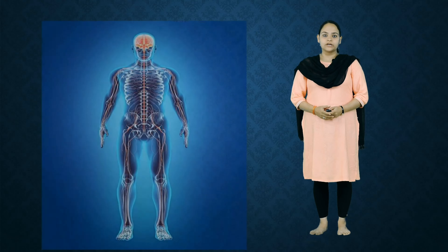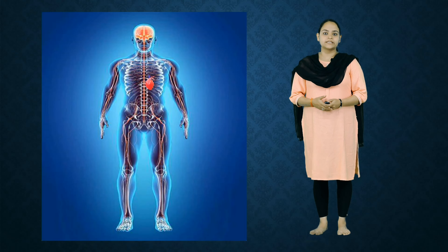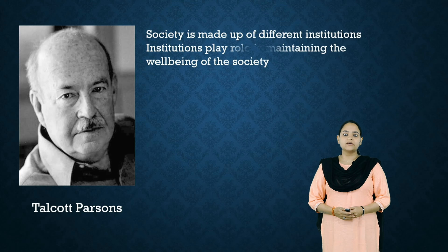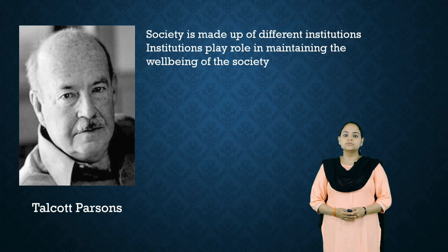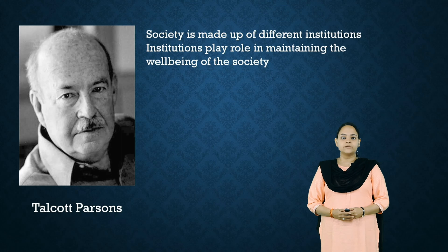To give you an example, if you look at a human body, if there is a dysfunction in any of the organs, the functioning of the entire body gets disrupted. It was Talcott Parsons, an American sociologist, who was a key figure in developing the functionalist theory. Parsons opined that every society is made up of certain structures which constitute the social institutions, and each of these institutions plays a certain role in maintaining the well-being of society.